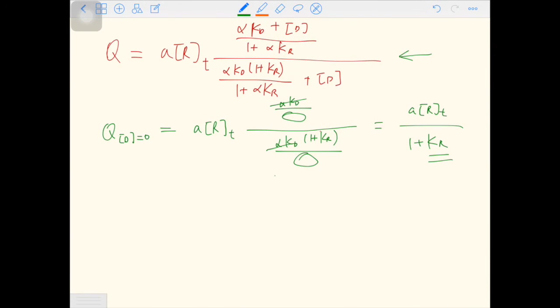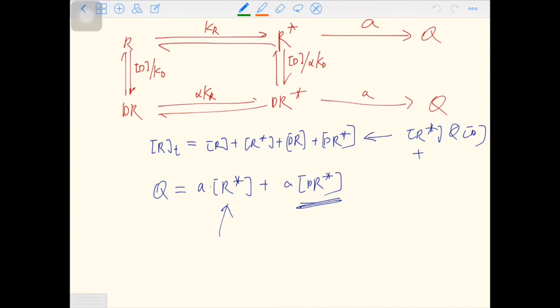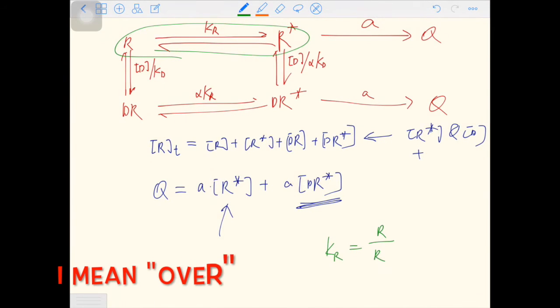The minimum value of KR is zero. In that case, the constitutive activity is a times RT. So what does it mean when KR is zero? Look at this part. When KR is zero, all the receptors are in the active form, because KR equals R over R star.